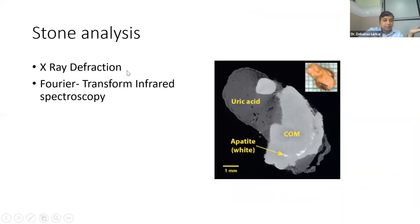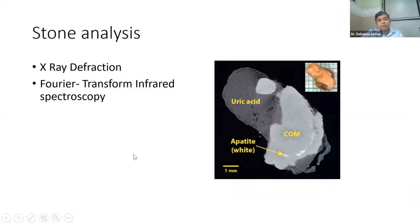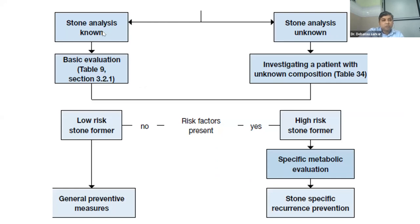If stone analysis is known, do a basic evaluation. If stone composition is unknown, do an extensive metabolic evaluation. If the patient is low-risk, prescribe general preventive measures. If the patient is a high-risk recurrent former, do specific metabolic evaluation and take specific recurrence prevention measures. The metabolic workup should be done after clearing the patient of stones — wait at least three weeks, ideally three months — and then do a 24-hour urine sample analysis for calcium, magnesium, sodium, potassium, oxalate, citrate, and uric acid. This is not needed in low-risk category patients. With this workup, more than 50% of patients will reach a diagnosis of the exact pathology.